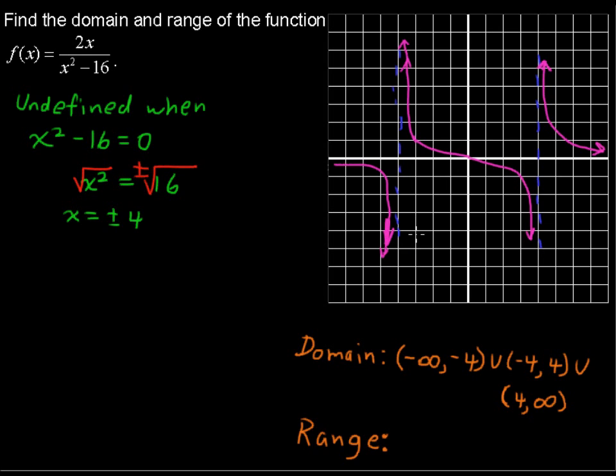So if this line goes up forever and down forever, we can see that this range is all real numbers. So you can write that range in set notation, all real numbers, as negative infinity to positive infinity.